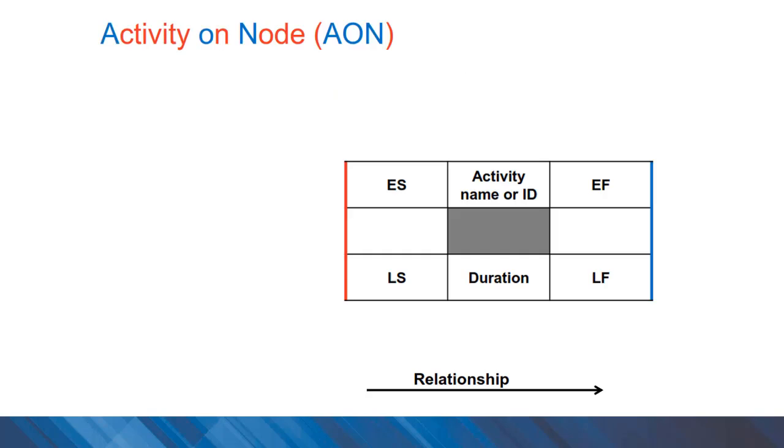Activity on node networks are a very clear way of illustrating project networks. In this activity block, we have early start time and early finish time on the top row of the activity block, and late start time and late finish time on the bottom row of activity blocks. Obviously, relationships are shown by arrows.